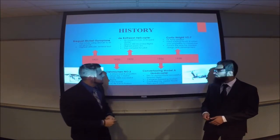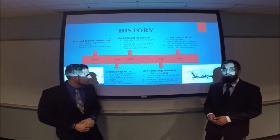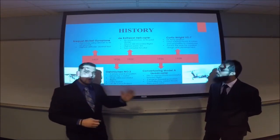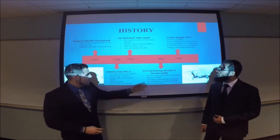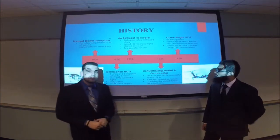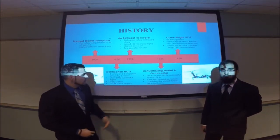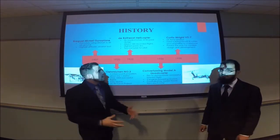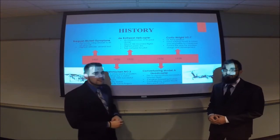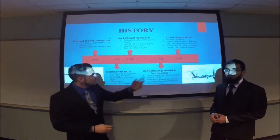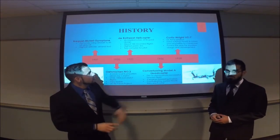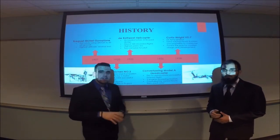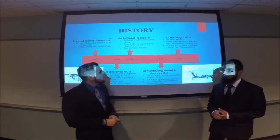The next was the Convertiplane Model 8 quadcopter, the first to demonstrate successful forward flight — all previous models only went straight up. It had two engines powering four rotors and was controlled by varied thrust of each rotor. The last historical model is the Curtiss-Wright VZ-7, from 1958, used as a U.S. Army project, and it paved the way for the modern quadcopters we see today.